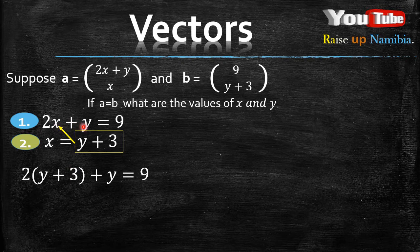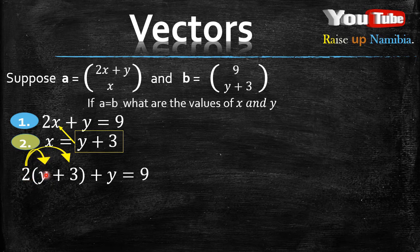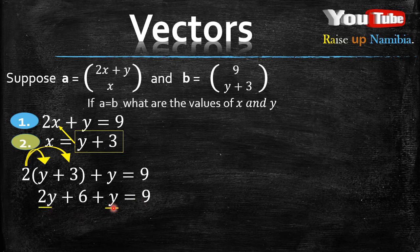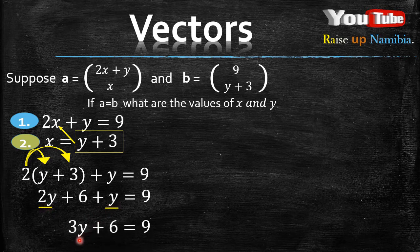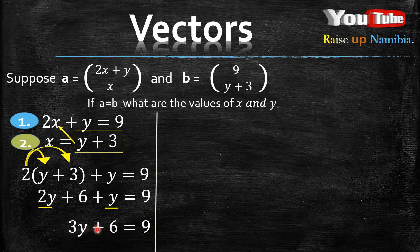So equation one was 2x plus y equals 9, and now we substitute y plus 3 in place of x, making sure to put it in brackets: 2(y plus 3) plus y equals 9. We expand the brackets: 2 multiplied by y gives 2y, and 2 multiplied by 3 gives 6, so we have 2y plus 6 plus y equals 9. Notice that 2y and y are like terms with a plus sign in front.